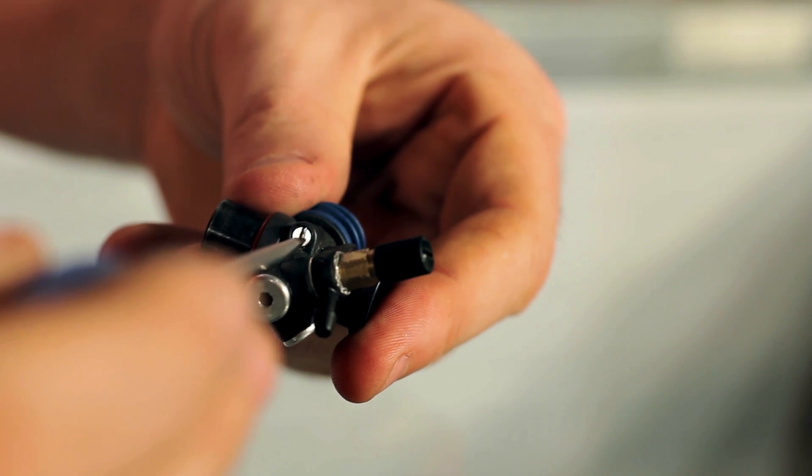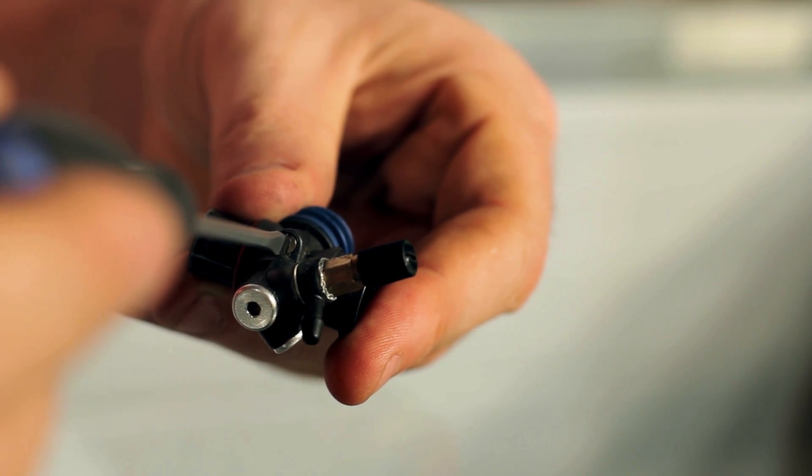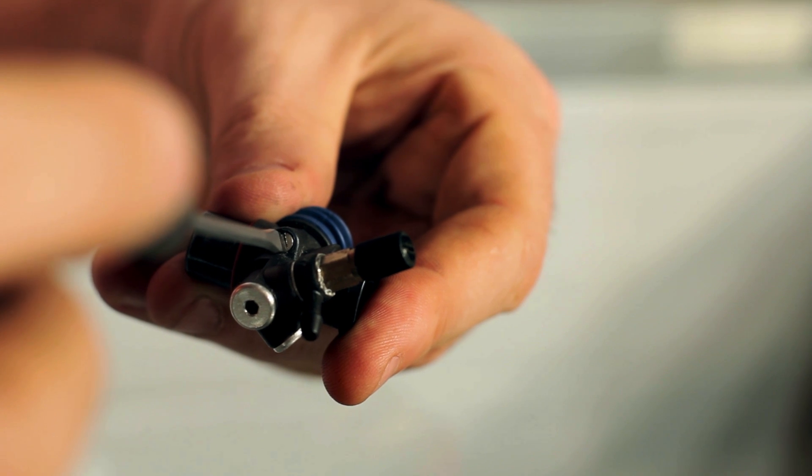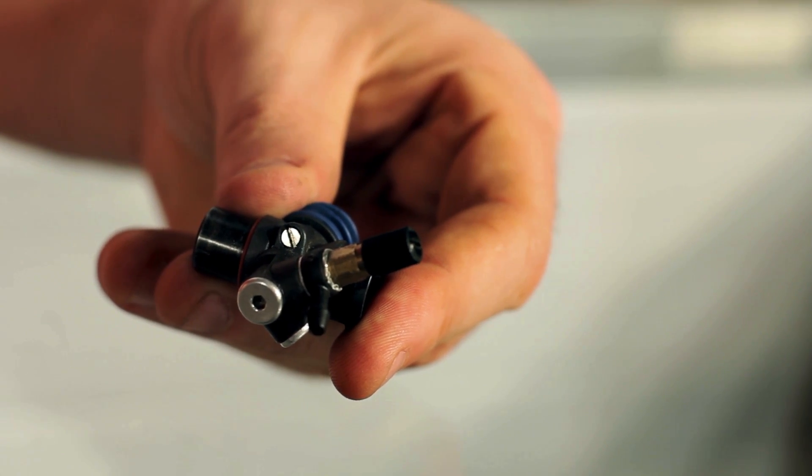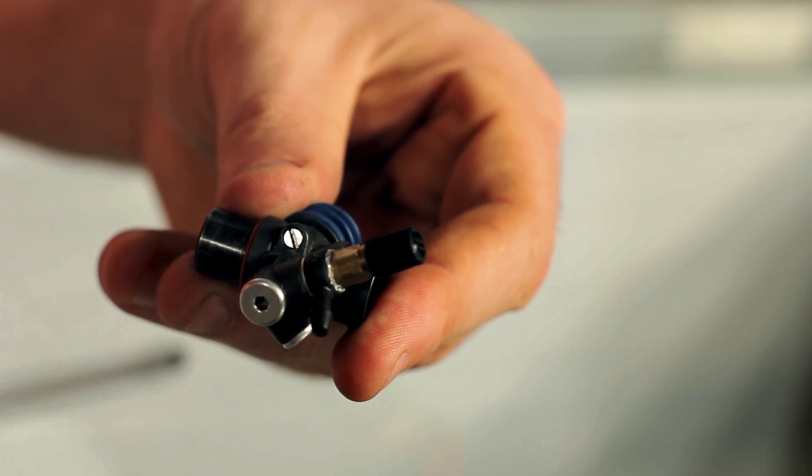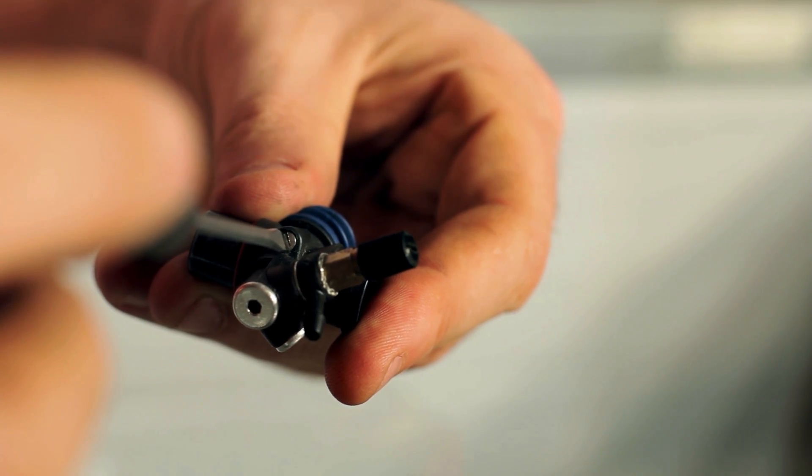While you're making these adjustments, you might find yourself having to adjust the idle speed screw. If the engine RPM is too high, you want to adjust counterclockwise one-eighth of a turn. If the idle speed is too low, you want to increase it or go one-eighth of a turn clockwise.